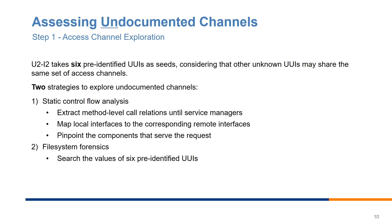Next, we share our assessment of undocumented access channels, beginning with their exploration. We take the six pre-identified UUI access patterns and expect unknown UUIs may share the same access channels. We adopt two strategies: the first is static control flow analysis using a three-step approach — extracting method-level correlations up to service managers, mapping local interfaces to corresponding remote interfaces owned by Android system services, and performing another round of static analysis to pinpoint components that really serve the UUI based on API requests. We also resort to file system forensics to find any additional access channels.